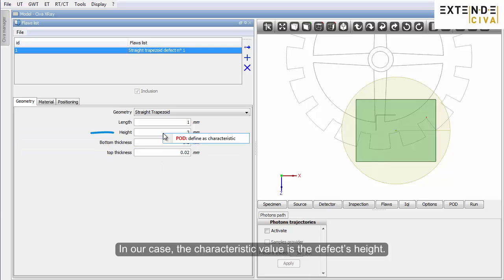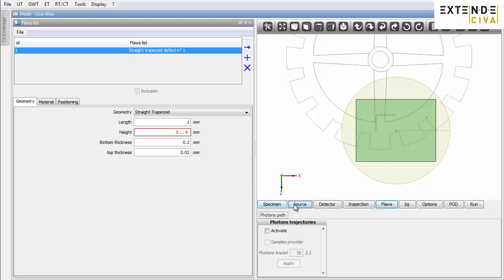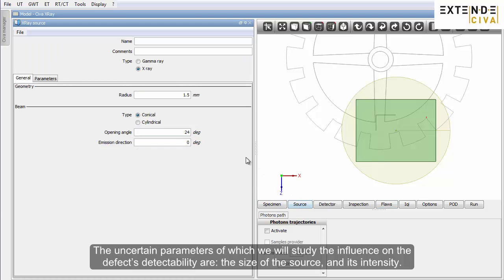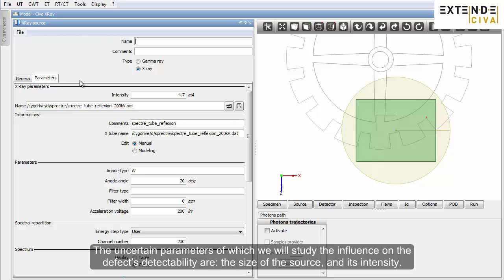In our case, the characteristic value is the defect's height. The uncertain parameters of which we will study the influence on the defect's detectability are the size of the source and its intensity.